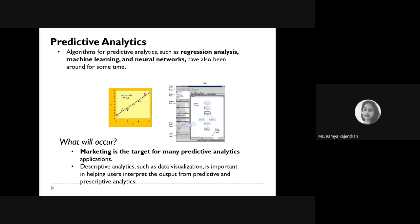For predictive analytics, machine learning algorithms like regression and neural networks are used — classification is not used as much here. These algorithms help forecast sales, predict how many customers will be gained or lost in the next year. Predictive analytics is most commonly used in the marketing department. Results are often surfaced through BI dashboards so business users can view them.